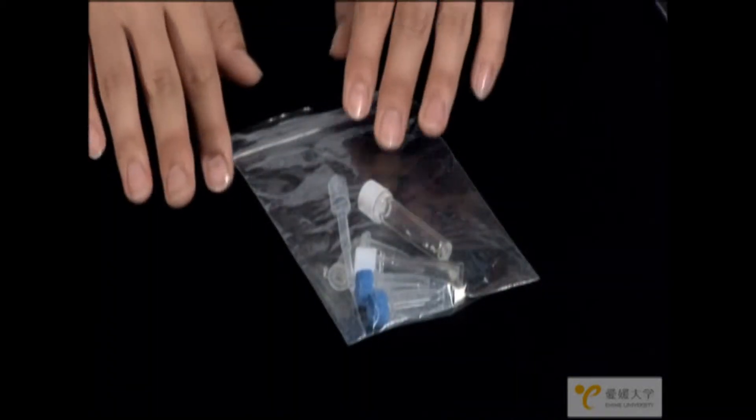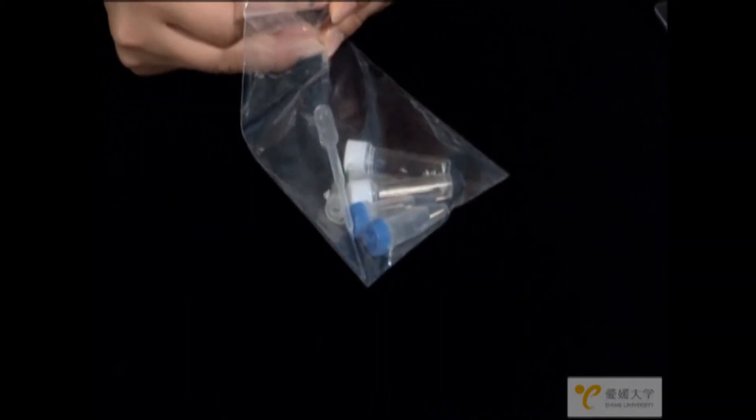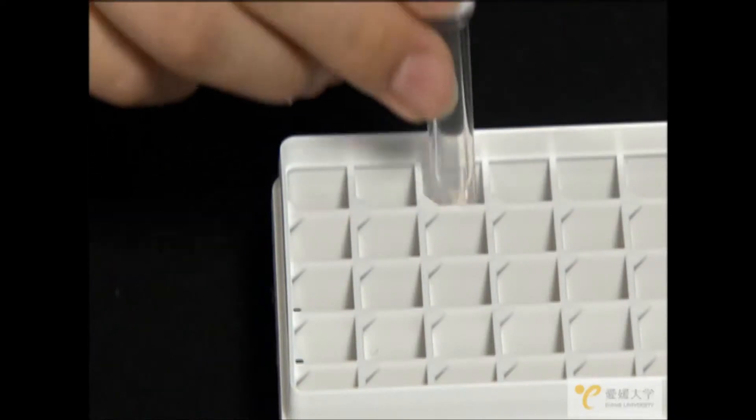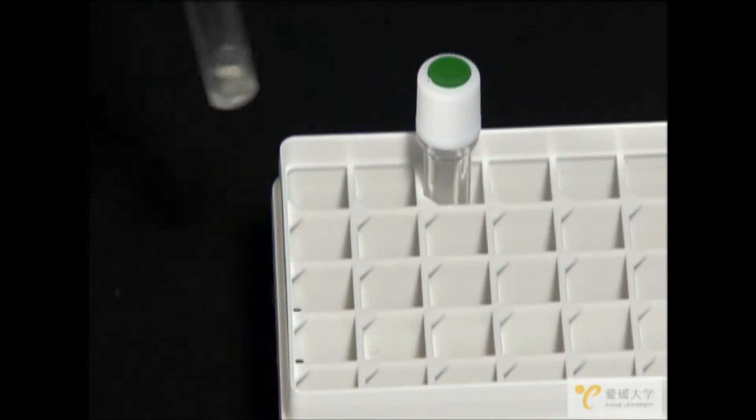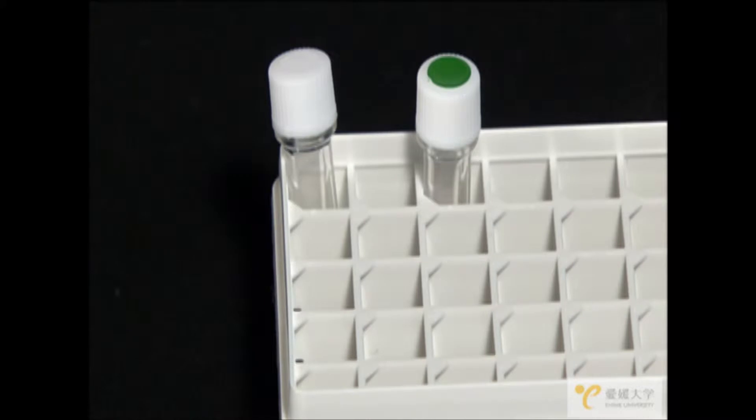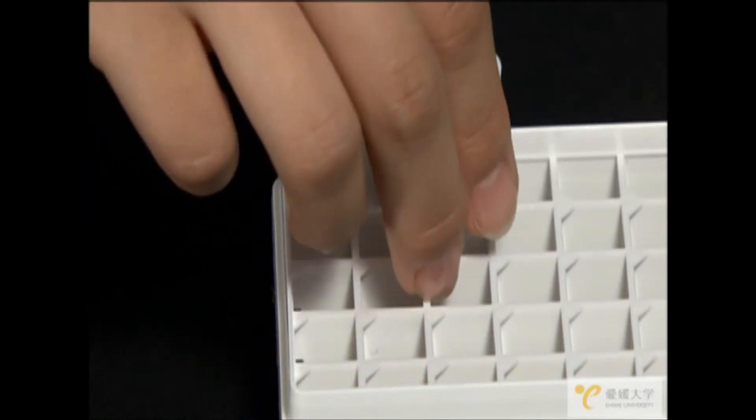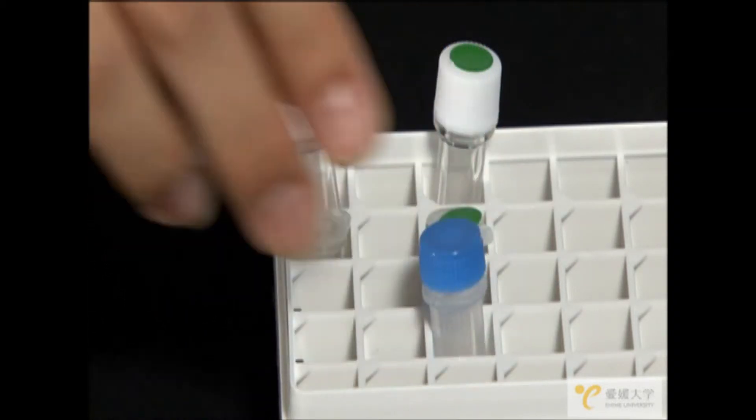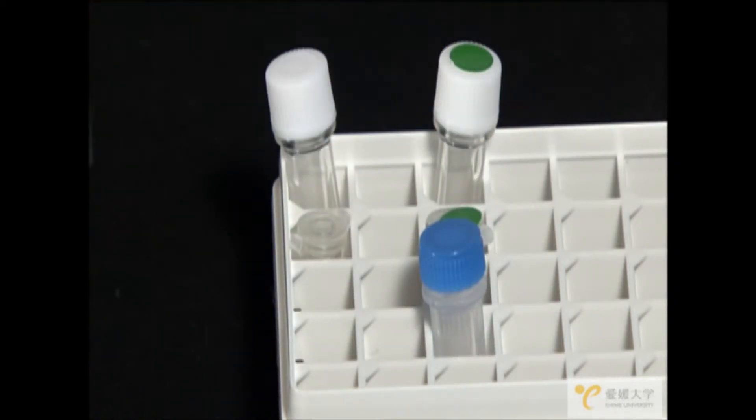Before beginning, let's make sure we have everything we need. Two tubes with white caps, one with a green dot on the cap, one with no dot. Two small tubes, one with a green dot on the cap and one without. Two tubes with blue caps. So all together there are six tubes and a dropper.